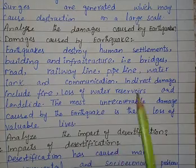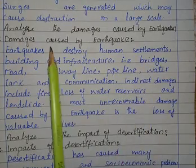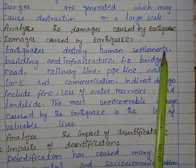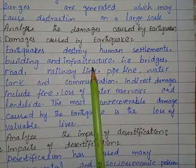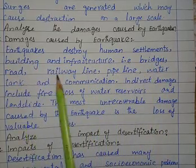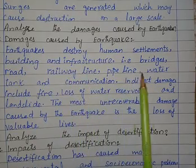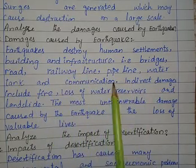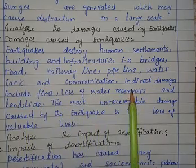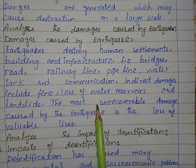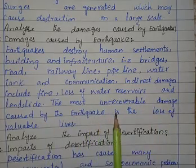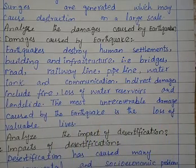Analyze the damage caused by earthquake. Damages caused by earthquake: earthquake destroys human settlements, buildings and infrastructure — i.e. buildings, roads, railway lines, pipelines, water tanks and communication systems. Indirect damage includes fire, loss of water reservoirs and landslide. The most unrecoverable damage caused by earthquake is the loss of valuable lives.